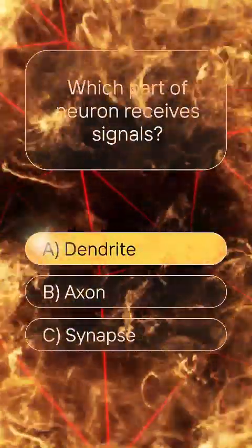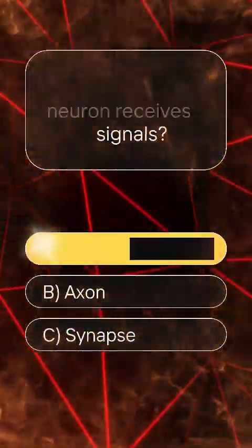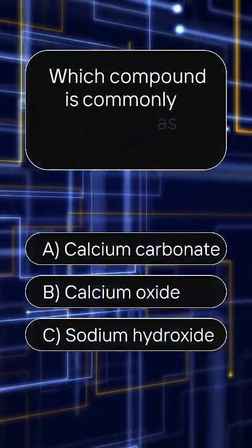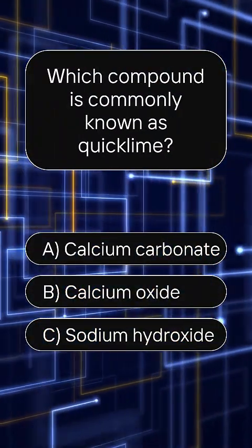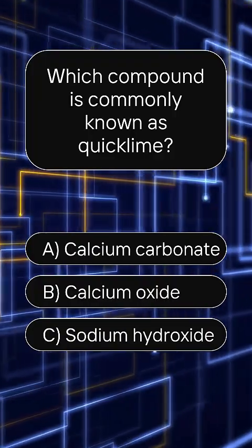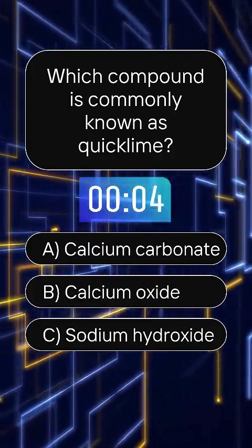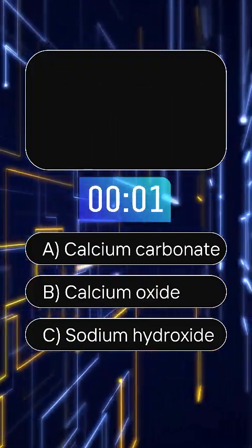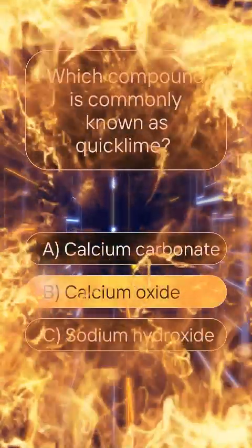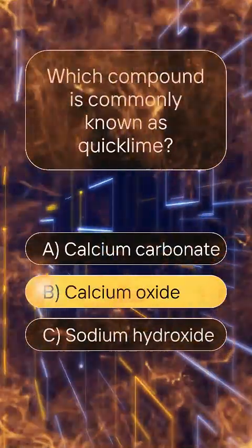Answer A: Dendrite. Which compound is commonly known as quicklime? Answer B: Calcium oxide.